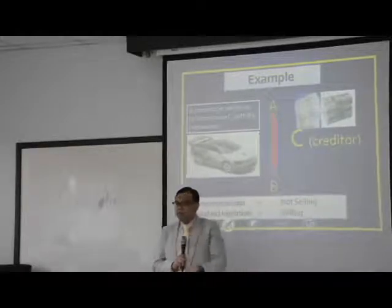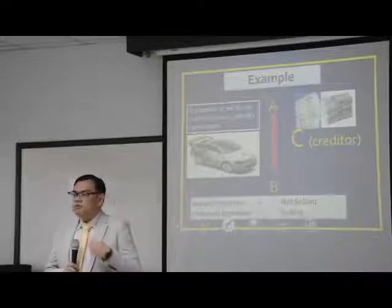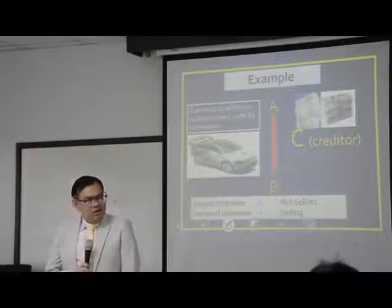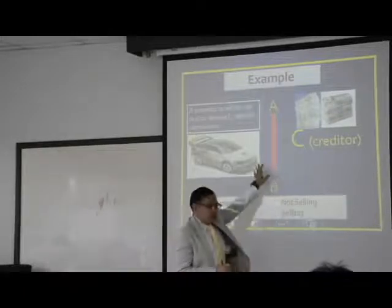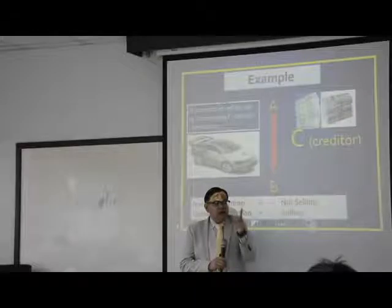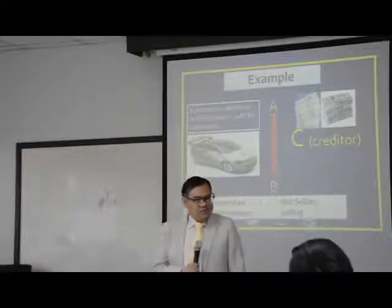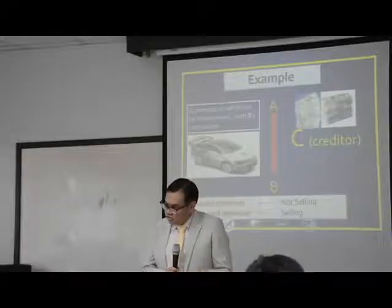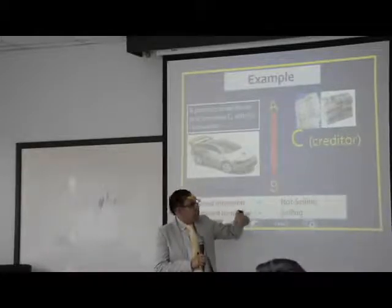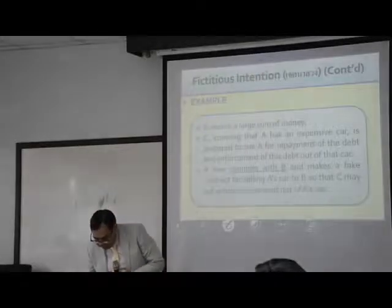But in fact, the car still belongs to A, because in fact A does not have any intention to sell this car to B at all. He just pretends to sell the car to B in order to deceive C that the car now belongs to B. You can see that in this case, the intention as expressed or declared by A is not real. When it's not real, we call this one the fictitious intention. The word fictitious means fake. So A has a fictitious intention in this case. Both A and B enter into conspiracy — some connivance between A and B.